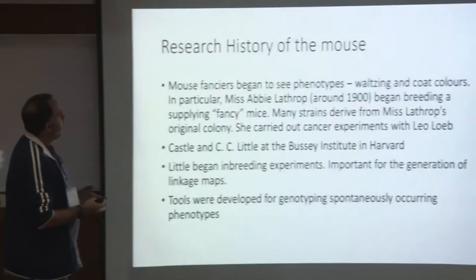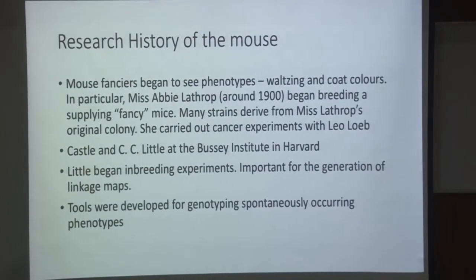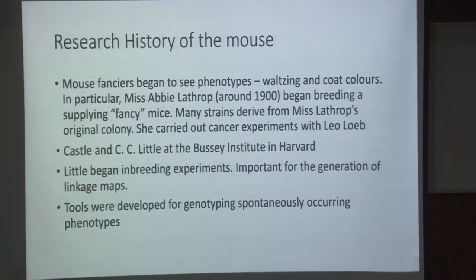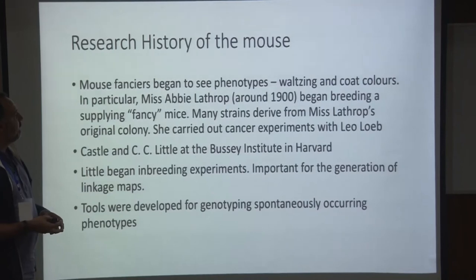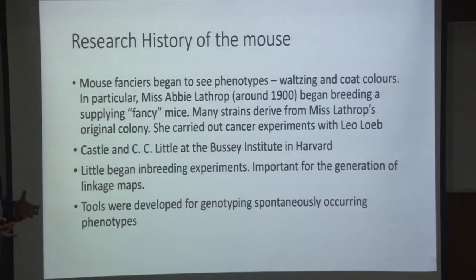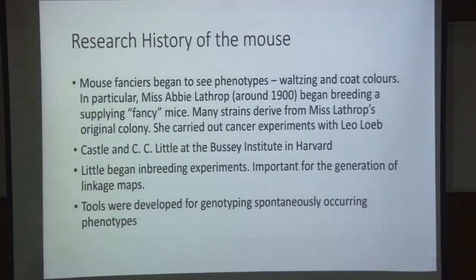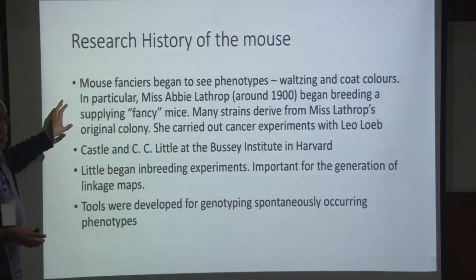The idea of mouse fanciers became stronger at the turn of the 19th century, much of it crystallized in the U.S. In particular, Miss Abby Lathrop around 1900 began breeding and supplying these fancy mice — she had a huge colony. Even now, common strains we use, like the black C57BL/6, derive from her original strains. She also started doing experiments with Leo Loeb, realizing that some inbred strains are more prone to cancer, and she did initial experiments on cancer at the Bussey Institute at Harvard.